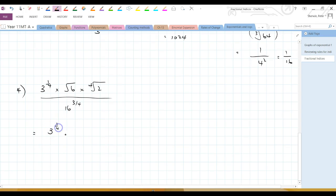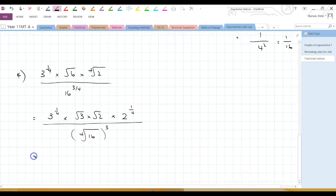So the 3 to the power of 1 quarter can stay. That root 6 though, I know that that's square root of 3 times the square root of 2. I'll come back and fix those in a moment. And this is 2 to the power of 1 quarter. And this is 6. I can work this out immediately. This is the 4th root of 16, which is 2 to the power of 3, which is 8. Okay, I'll come to fix that up. I'm going to just write this as 3 to the quarter times 3 to the half times 2 to the half times 2 to the quarter.